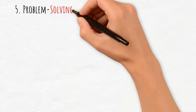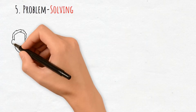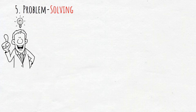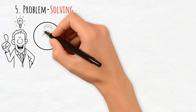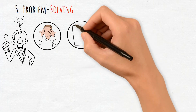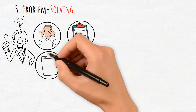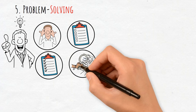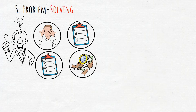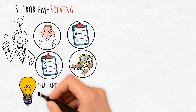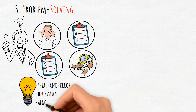5. Problem Solving. Problem solving involves identifying solutions to specific challenges or obstacles. Cognitive psychology breaks this process into stages: understanding the problem, devising a plan, executing it, and evaluating the outcome. Strategies like trial and error, heuristics, and algorithms guide these stages.